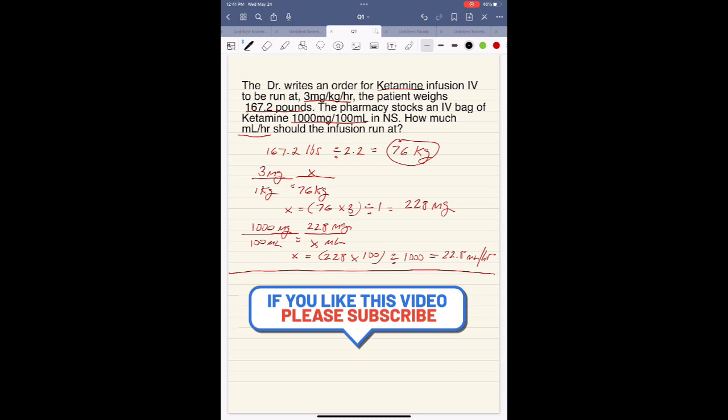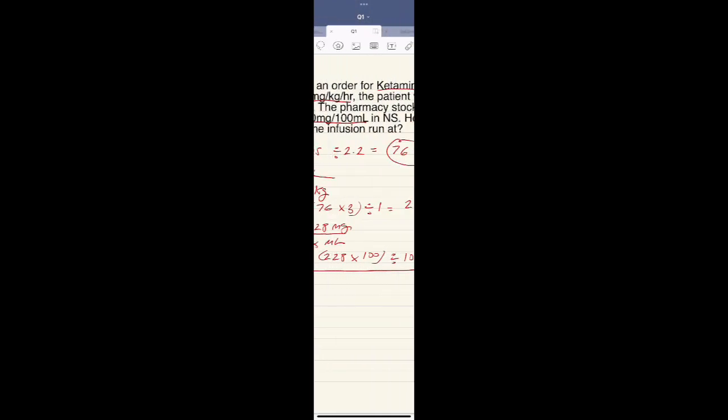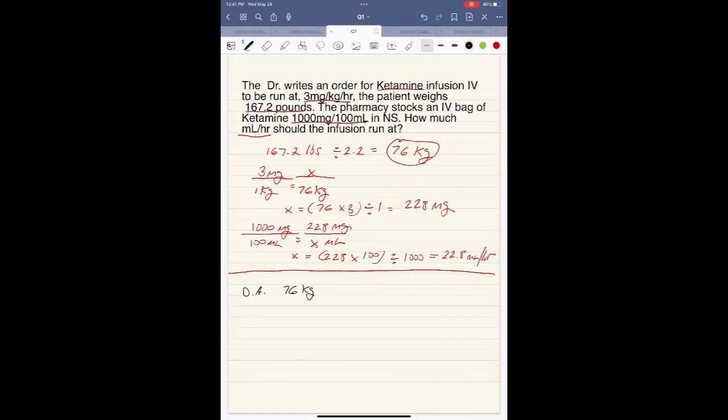If you like the video, please like and subscribe. Next, we're going to do this in dimensional analysis. So 76 kilograms over 1 times 3 milligrams per kilogram - we want the units to cancel out, so put the kilograms on the bottom: 3 milligrams over 1 kilogram.